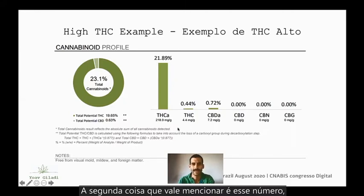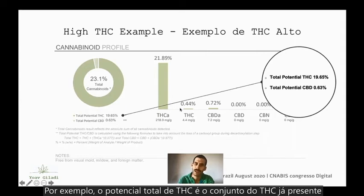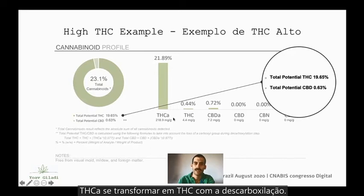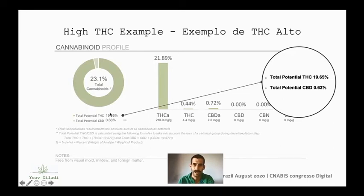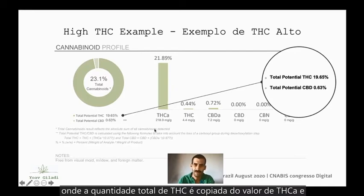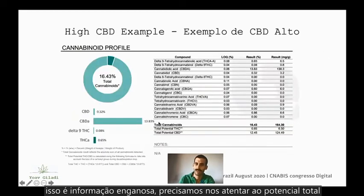Worth mentioning is the total potential THC and the total potential CBD figures. The total potential THC is an aggregation of the THC plus the estimated THC that will be yielded after THCA undergoes decarboxylation. This is the number to pay attention to. Sometimes you can see misleading information where the total amount of THC is a copy-paste of the amount of THCA — that is misleading. We should always pay attention to the total potential THC and CBD.